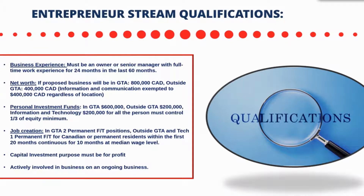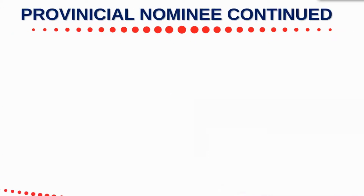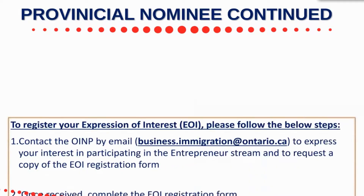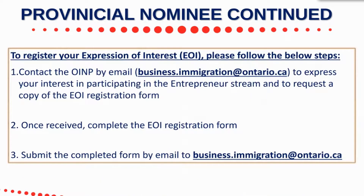If this entrepreneur stream applies to you, there is a link in the chat to check it out. To proceed, you must initiate the process by sending an Expression of Interest (EOI). To register, you need to complete the registration form via email and submit it — that's how they know you are interested.